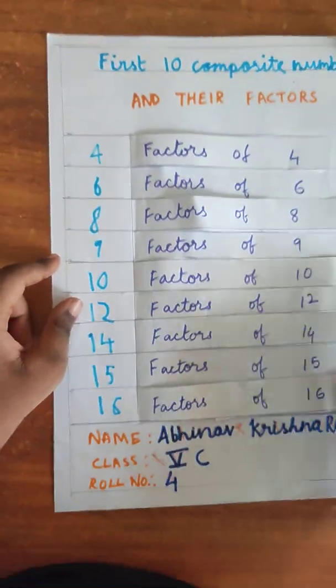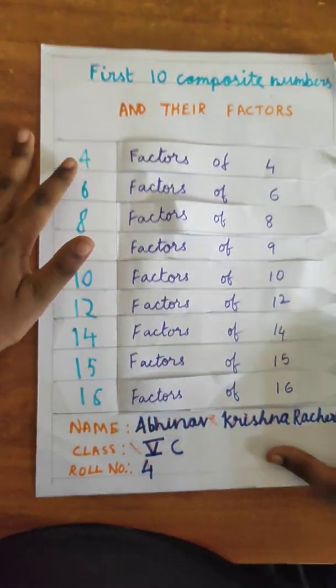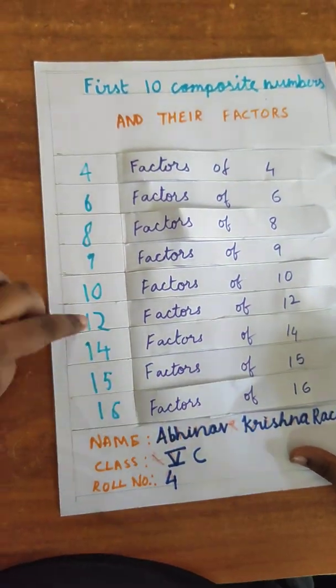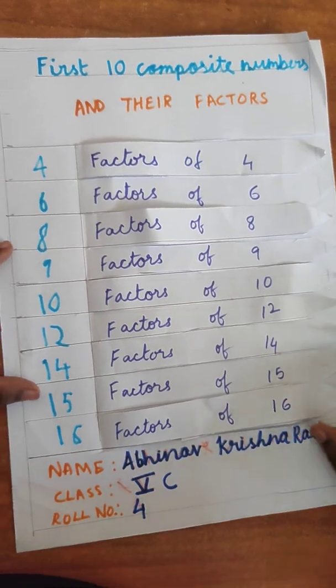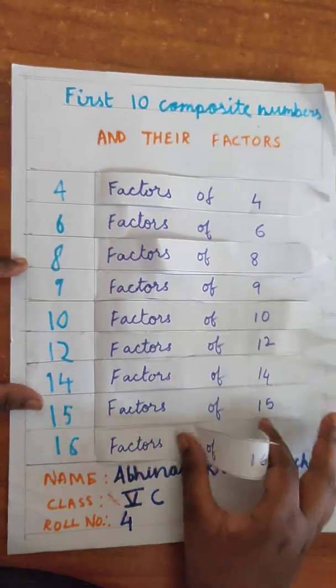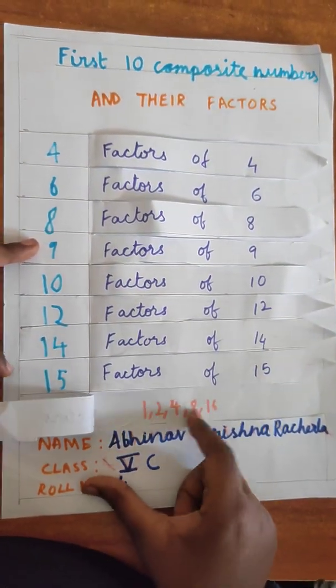Now, pick any number, Aditya. Which number do you want to choose? The options are 4, 6, 8, 9, 10, 12, 14, 15, and 16. Which one do you want to select? 16. Okay. Now, factors of 16 are 1, 2, 4, 8, and 16.